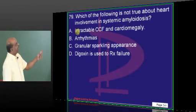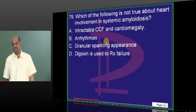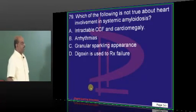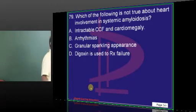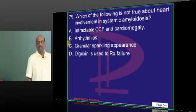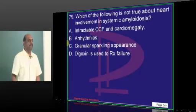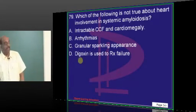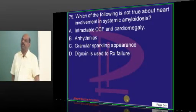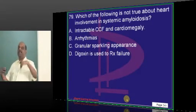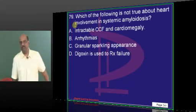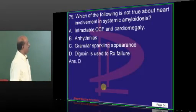Which is not true about the heart involvement in amyloidosis? Generally digoxin is used for which type of failure? Between systolic and diastolic failure, you will use digoxin. But in the case of amyloidosis, what kind of failure you call it as? It is a failure to stretch and get filled. That's the main reason. So you don't have any role for digoxin.